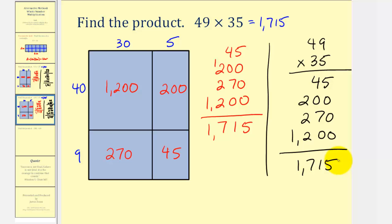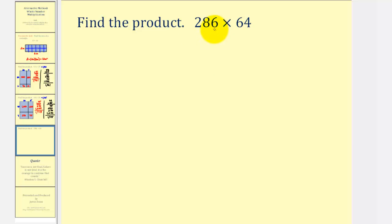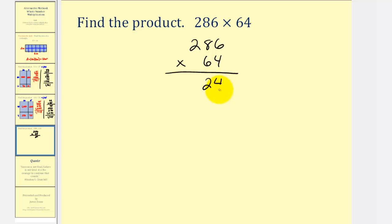Let's try one more example where we don't use the rectangle and just use the more traditional setup, multiplying each digit and paying attention to the place value. Here we have 286 times 64. We start by multiplying the 4 and the 6, which are in the ones place value — 4 times 6 is 24. Next we'd have 4 times 80, because the 8 is in the tens place value — 4 times 80 is 320. Next we'd have 4 times 200, because the 2 is in the hundreds place value — 4 times 200 is 800.